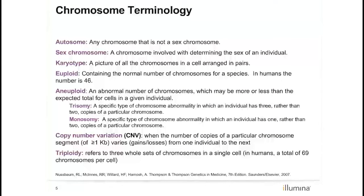When discussing chromosomes, here is a basic list of terminology with which one should be familiar. Autosomes refer to nonsex chromosomes; chromosome pairs 1 through 22 are autosomes in humans. Sex chromosomes determine the genetic sex of an individual and are the X and Y chromosomes in humans. A karyotype is a picture provided following standard cytogenetic analysis — it shows all chromosomes in a cell paired up and identified from one another. A cell that is euploid contains the typical number of chromosomes expected for a species, designated as 2N; for humans, this number is 46. Aneuploidy, in contrast, is when the number of chromosomes present is different than expected, typically 2N plus or minus 1.